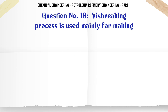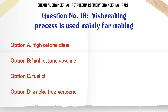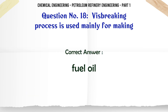Visbreaking process is used mainly for making: A. High-cetane diesel, B. High-octane gasoline, C. Fuel oil, D. Smoke-free kerosene. The correct answer is Fuel oil.